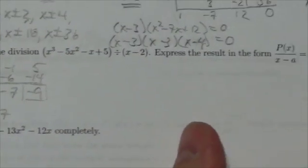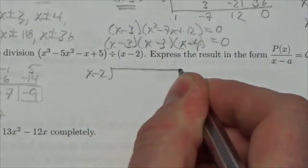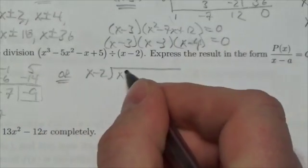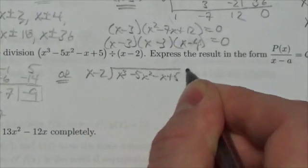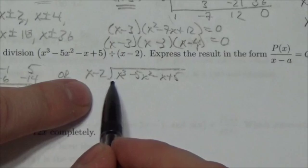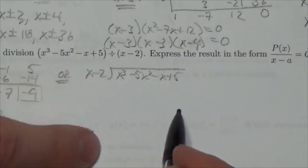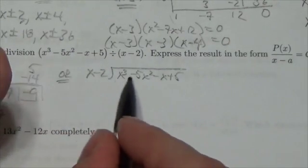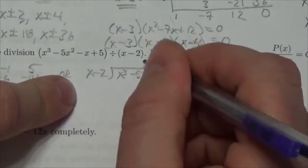Now, let's try polynomial long division: x minus 2 dividing x cubed minus 5x squared minus x plus 5. With polynomial long division, I always eliminate the highest degree term first. I'll deal with the rest in the next step. So to get rid of x cubed, I need to multiply this x by x squared.